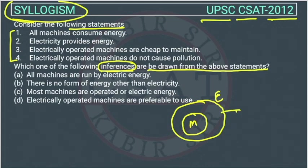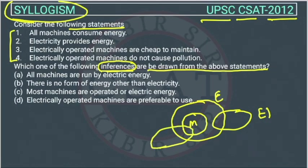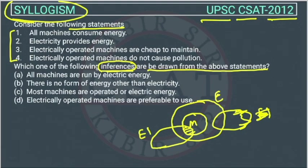So the electricity will be like this, or it can be like this. Electrically operated machines — so it's talking about electrically operated machines, about this shaded area. This shaded area represents electrically operated machines, which are cheap to maintain — maintenance is cheap.